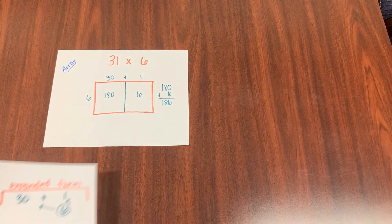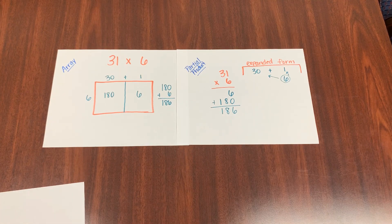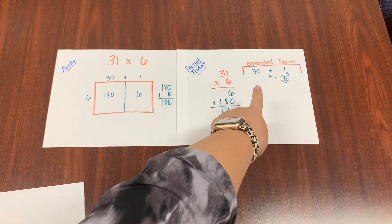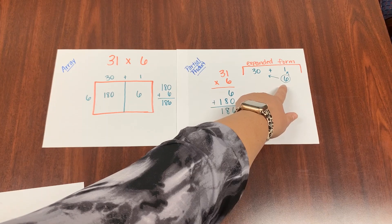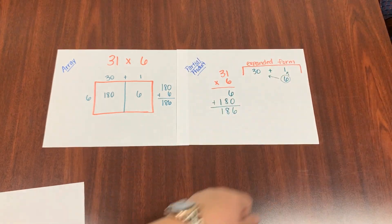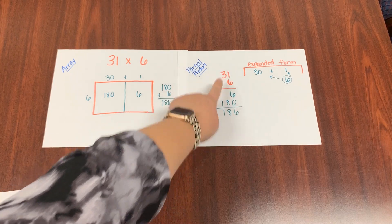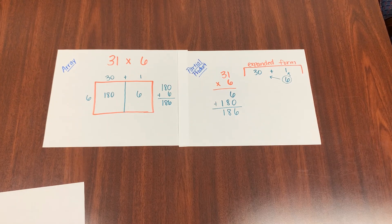We also did partial products, which look exactly the same, just a little bit different without the fancy box. You're still using that expanded form of 30 plus 1. We're taking the 6 and we're multiplying it by both the 30 and the 1. So 6 times 1 was 6. 6 times 30 is 180. And you add those together and you get 186 and that's your final product.